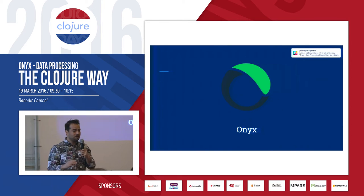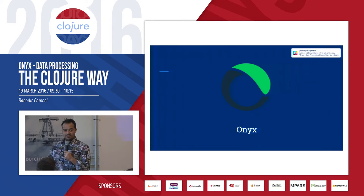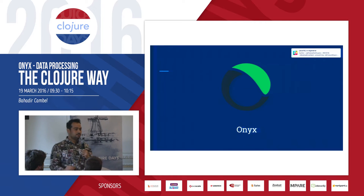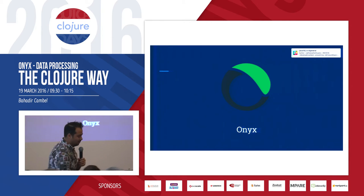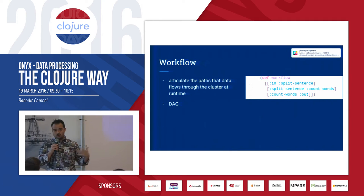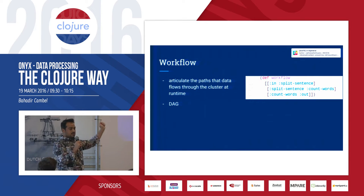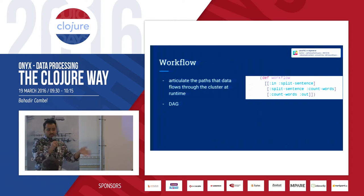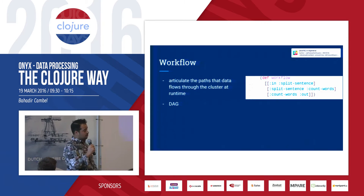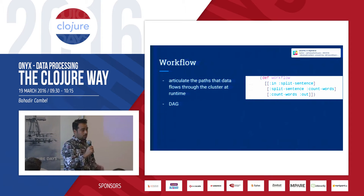Before getting into Onyx, I want to warn you: if you are expecting a one-line Clojure code that is going to solve the problem, you are wrong. It's not that simple. But there is good logic behind it. If you think about how you write your code, you need to think in this abstraction: you have an input, you split this input, then count the words. In Onyx terminology this is called a workflow — so you define your workflow.